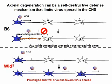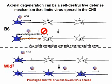This resulted in more active virus replication in the brain. The prolonged survival of axons in WLD^S mice favors virus spread. So, if we compare these two strains, axonal degeneration in B6 mice was good in Theiler's virus infection. This suggests that axonal degeneration can be a self-destructive defense mechanism that limits virus spread in the brain.